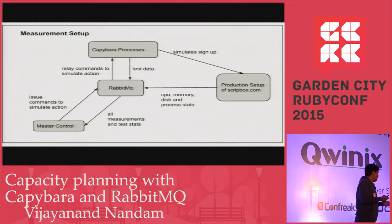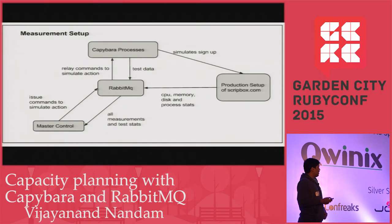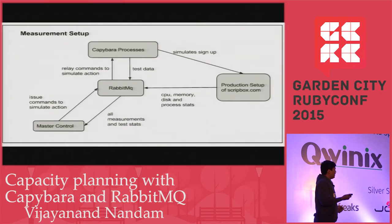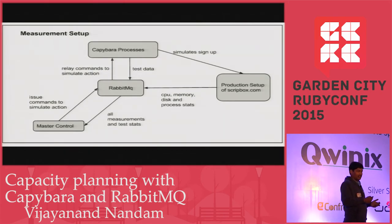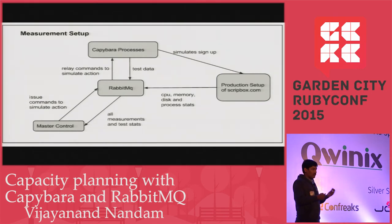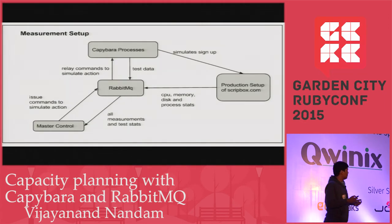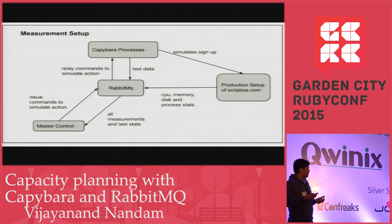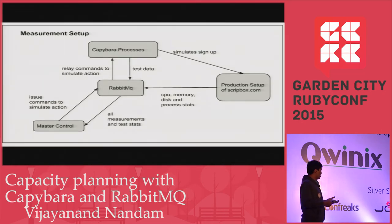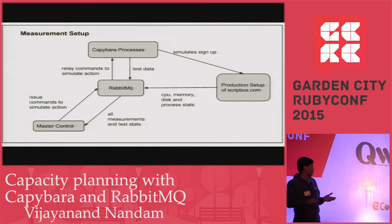We have the production setup of the actual live website set up in another instance. The Capybara process runs the sign-up process and posts back the test results — like the total time taken for the sign-up process — back to our master server. The production server also sends us CPU usage and memory usage during the test, along with a breakdown of CPU and memory usage for each process.